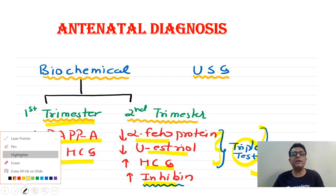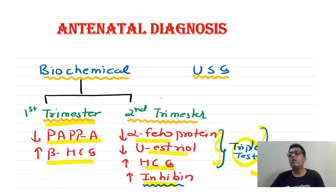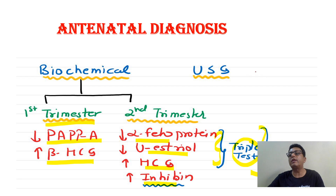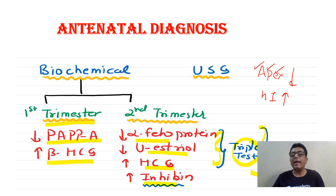How will you remember which are increasing and which are decreasing? You can write a mnemonic — like 'Apex': Alpha-fetoprotein, PAPPA, estradiol decrease. HCG and inhibin increase.